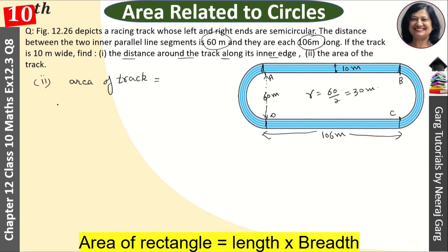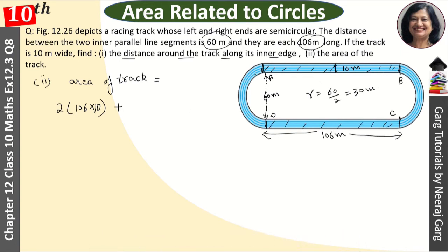So twice into 106 into 10. This is the same portion, this is the same portion, and we take the area of two semicircles.